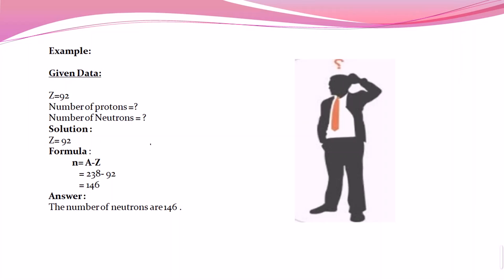Here is an example of how to calculate the atomic number and atomic mass. We are given that the atomic number Z is 92 — this is the uranium element. The number of protons is therefore 92. To find the number of neutrons, we use: N equals A minus Z, where A is the atomic mass. For this uranium isotope, the atomic mass is 238, so the number of neutrons equals 238 minus 92.